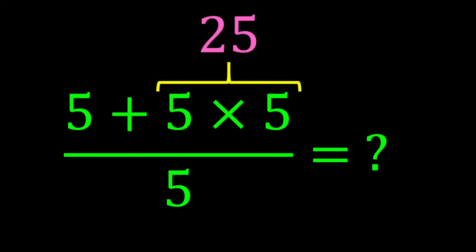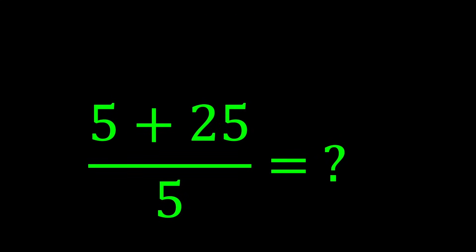5 multiplied by 5 gives us 25. Then 5 plus 25 gives us 30. Finally, 30 divided by 5 gives us 6, and our final answer is 6.